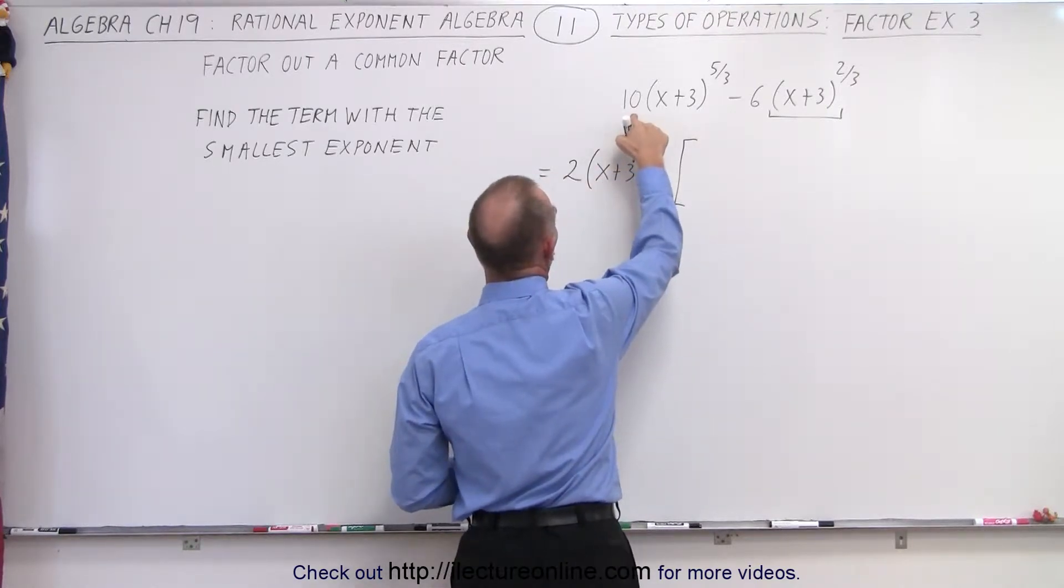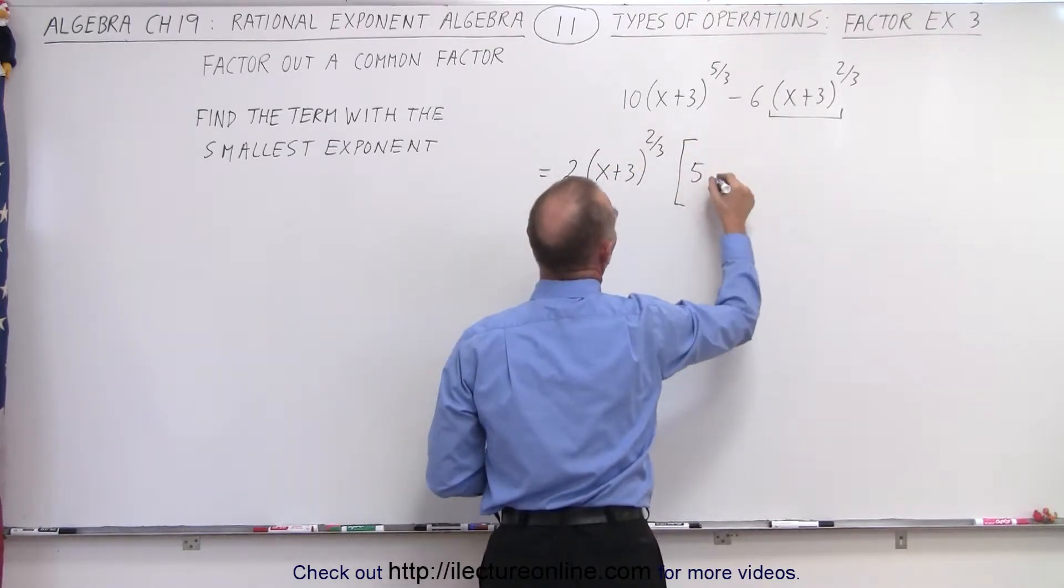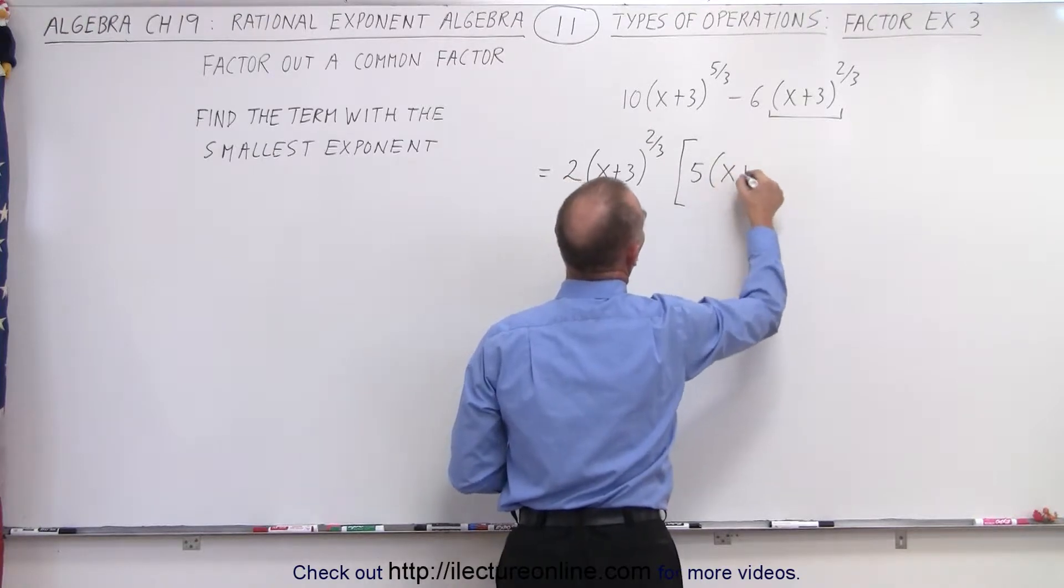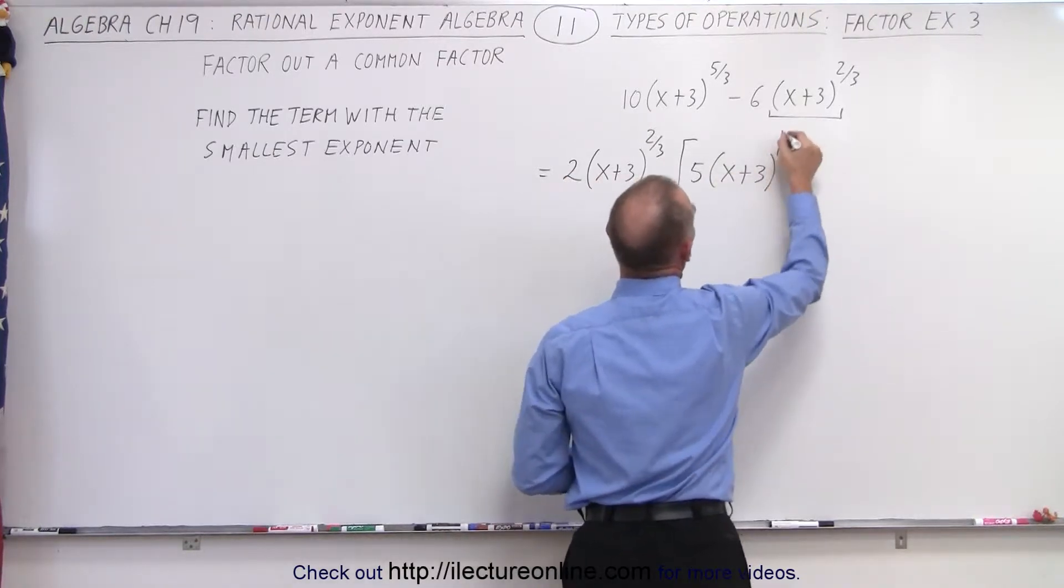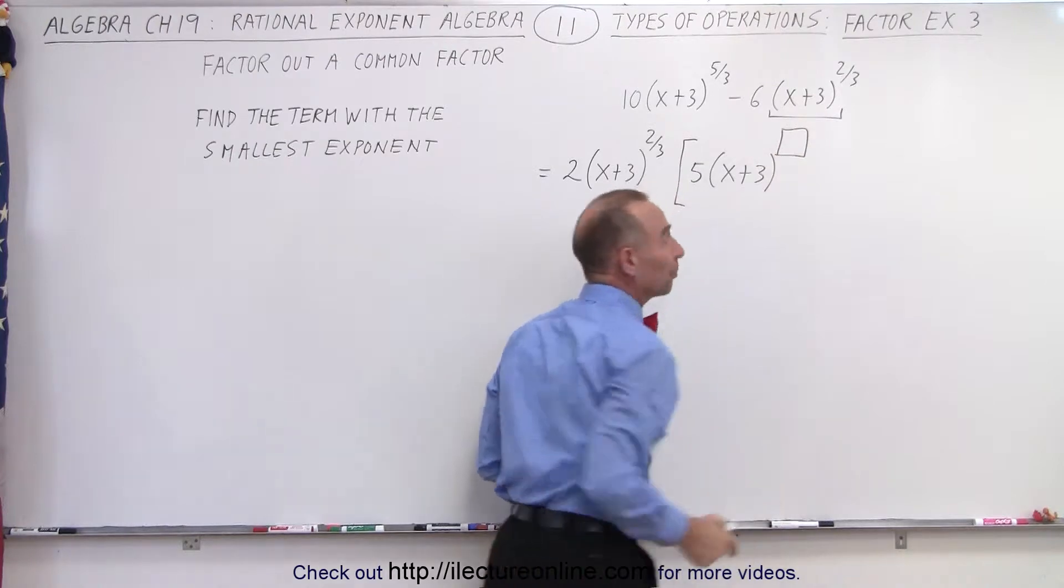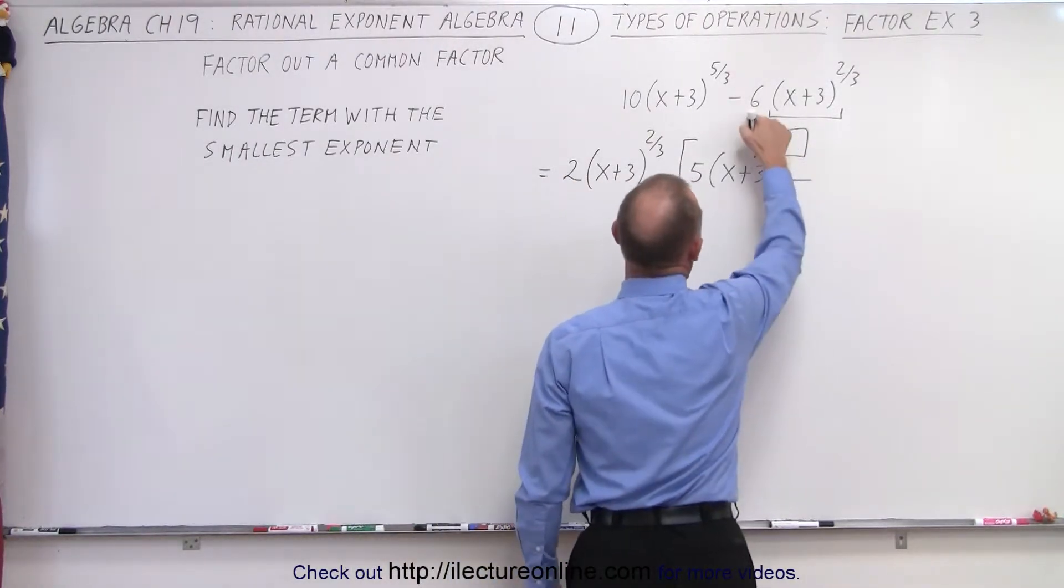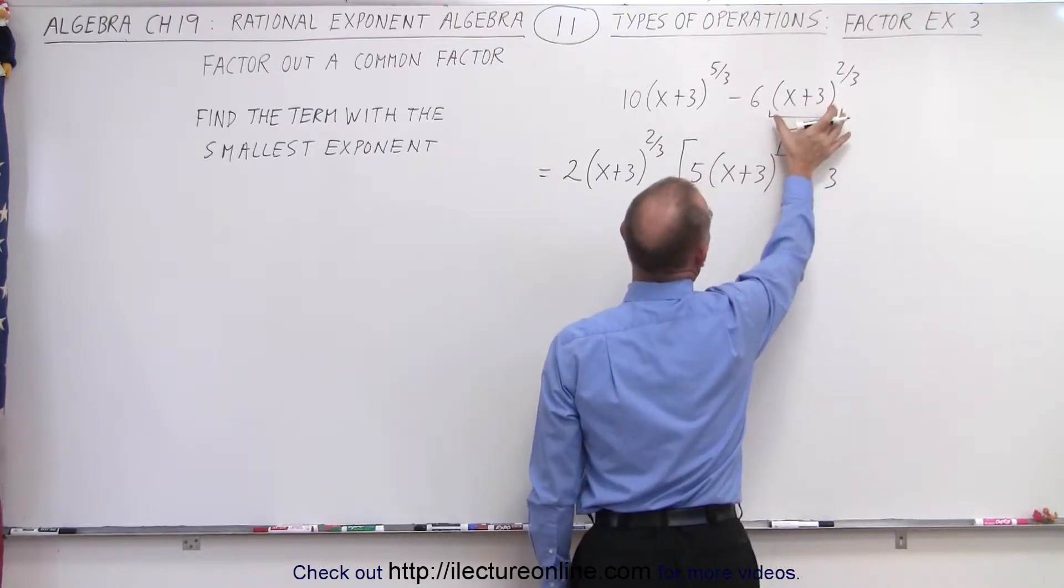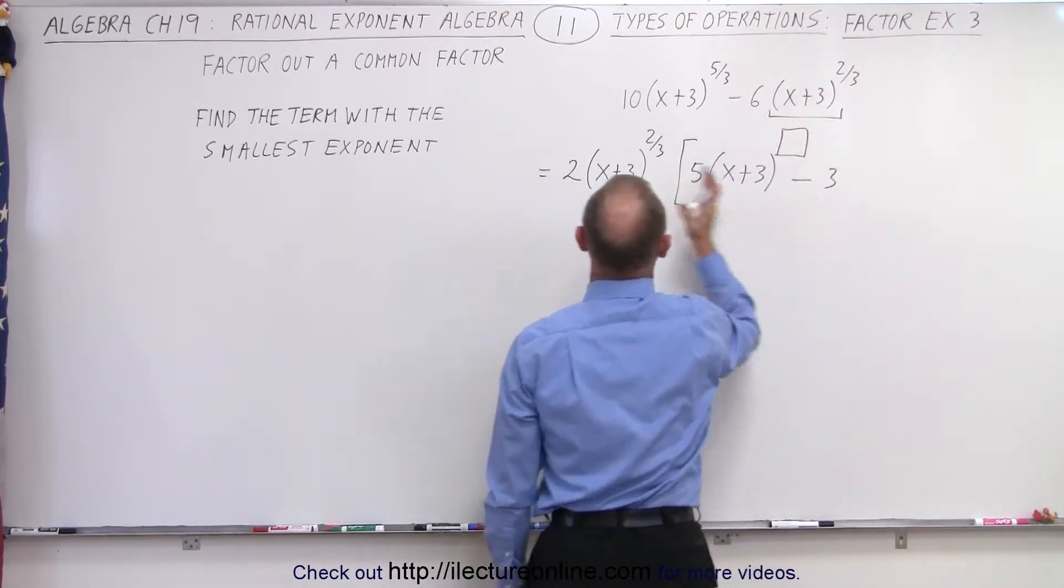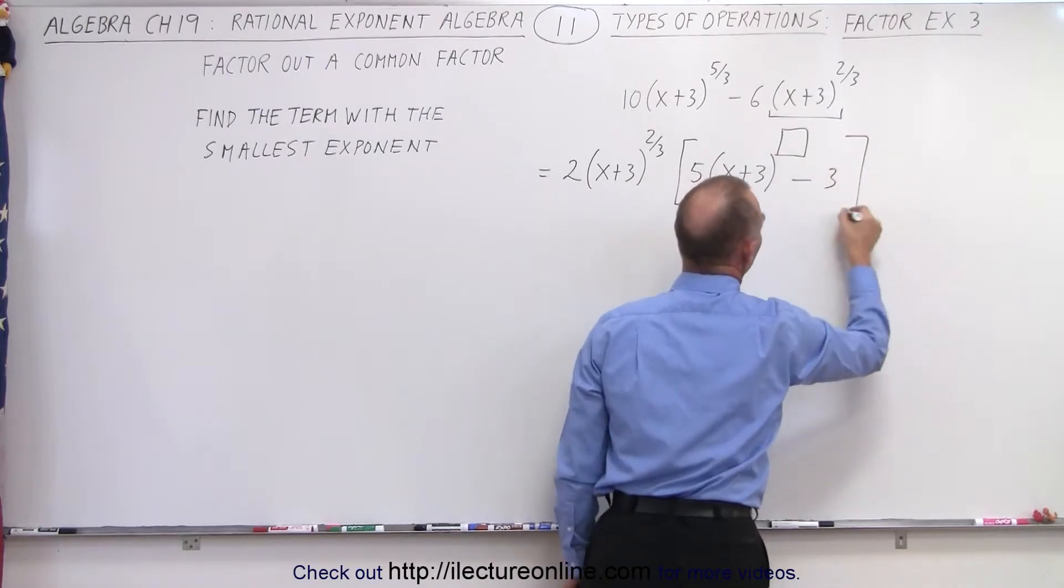When we factor out 2 from 10, we get 5, and then we have (x+3) to some exponent. We don't know yet what that exponent is, we'll get that in just a moment. Minus, when we factor out 2 from 6, we get 3, and of course we also factor out (x+3)^(2/3), that's gone, so we have nothing else left there.